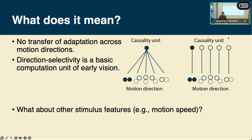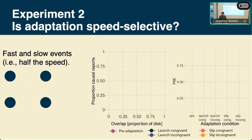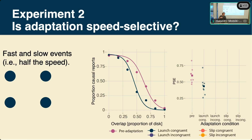The next experiment examined motion speed. Using the same speed as before, we tested whether adaptation transfers to a test event at half that speed. After observing the expected negative after-effect when adapter and test speed matched, we found that the adaptation also transferred across different speeds — showing speed invariance. Control slip conditions again showed no adaptation, confirming the effect is specific to causal impressions.